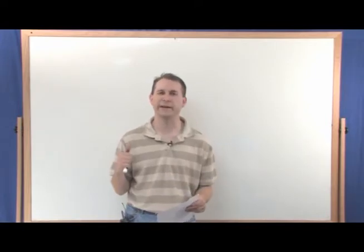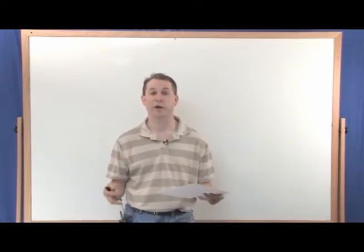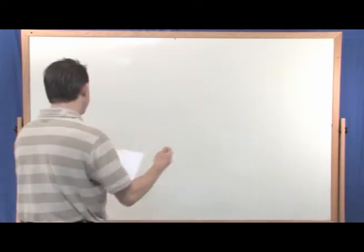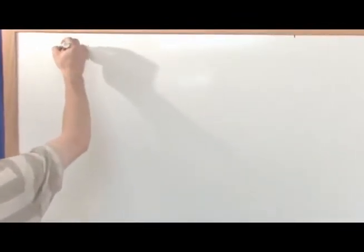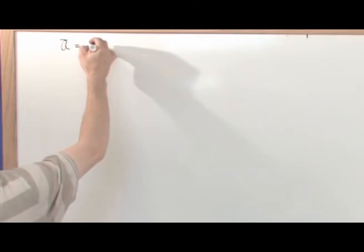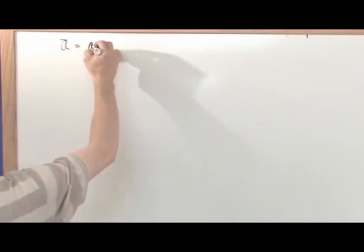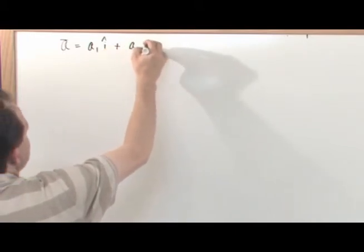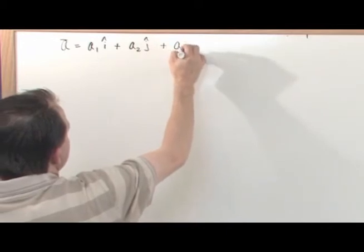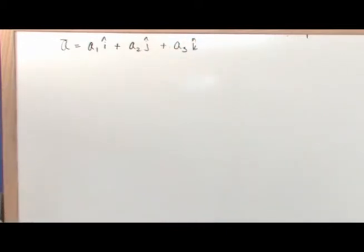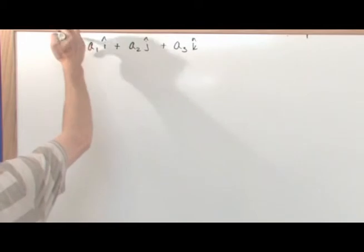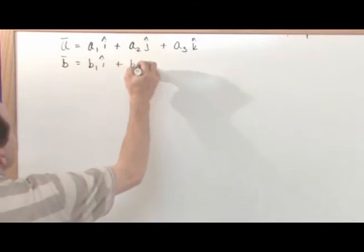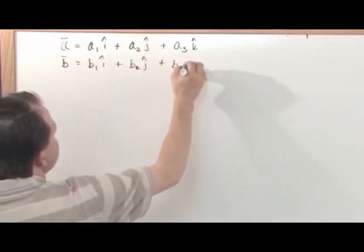So the dot product — let me write it down on the board, and then we'll talk about what it means physically and how you would use it. If you had a vector a with component a₁ in the x direction, a₂ in the y direction, and a₃ in the z direction (i, j, k), and another vector b with b₁ in the i direction, b₂ in the j direction, and b₃ in the k direction...